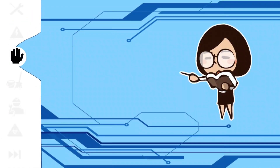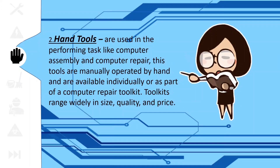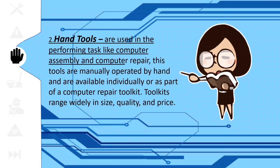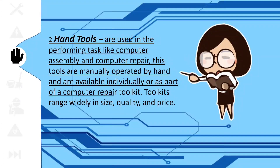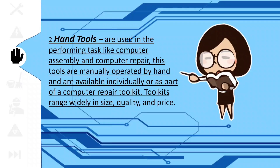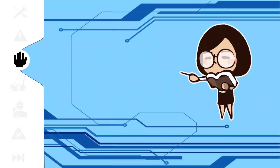Now, let's proceed to another category of hardware tools. Hand tools are used in performing tasks like computer assembly and computer repair. These tools are manually operated by hand and are available individually or as part of a computer repair toolkit. Toolkits range widely in size, quality, and price. Here are the classifications of hand tools.